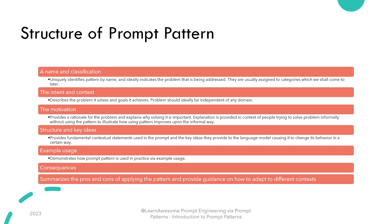Each pattern has the following structure. First, a name and classification, which uniquely identifies the pattern by name and ideally indicates the problem being addressed — these are usually assigned to categories, which we shall come to later. Second, the intent and context, which describes the problem it solves and goals it achieves — problems should ideally be independent of any domain. Third is the motivation, which provides the rationale for the problem and explains why solving it is important, with explanation provided in context of people trying to solve problems informally without using the pattern, to illustrate how using the pattern improves upon the informal way.